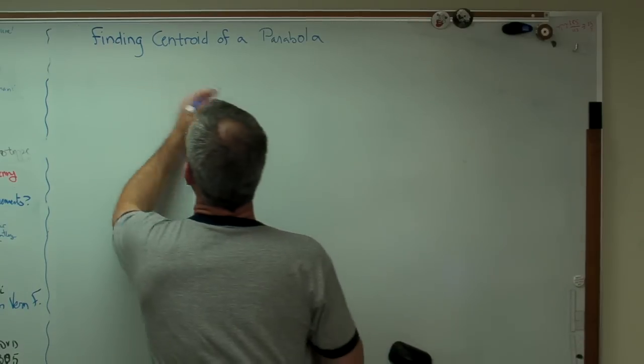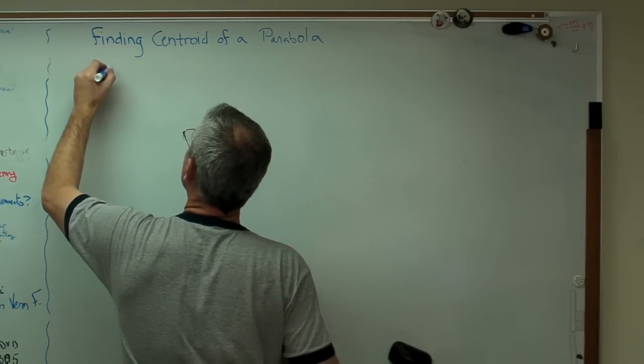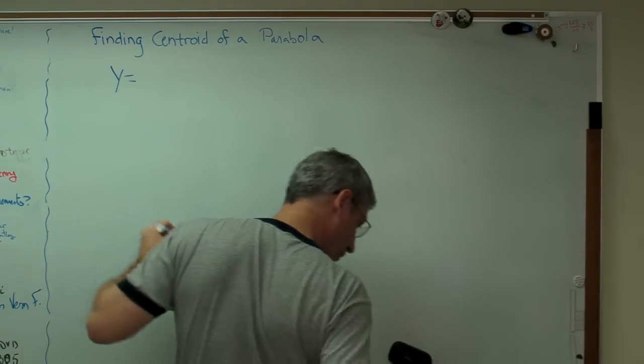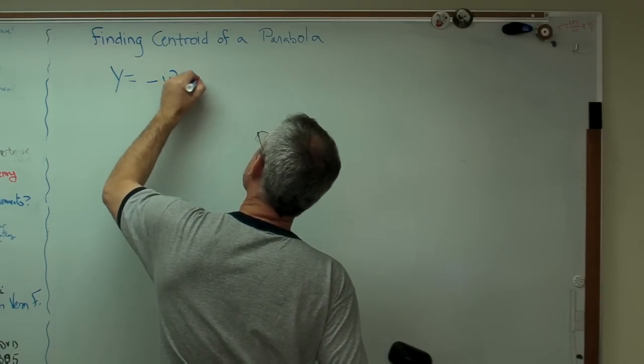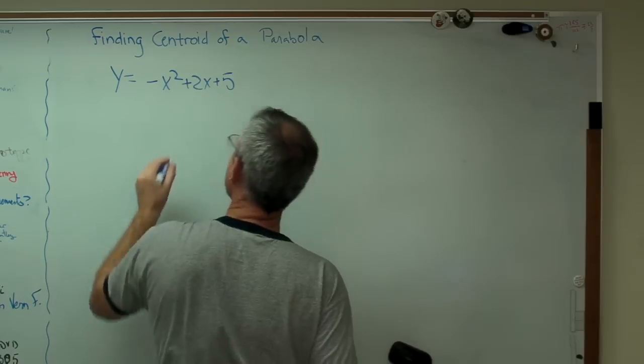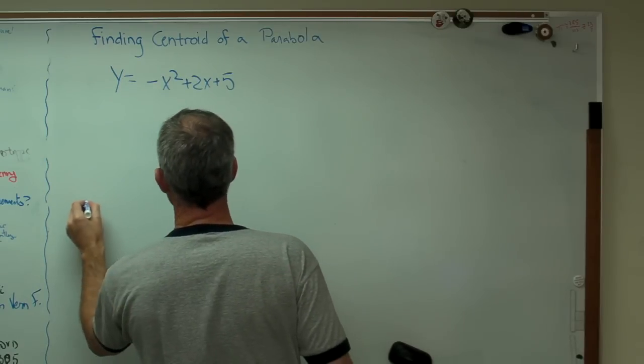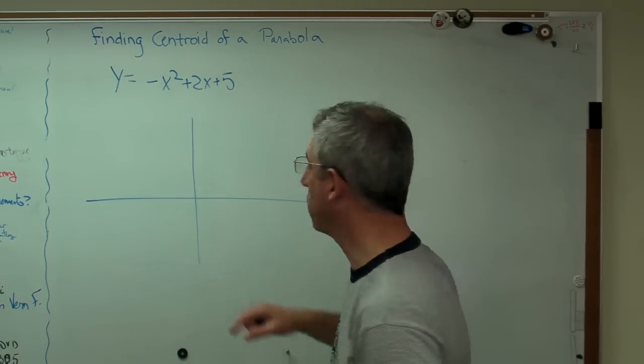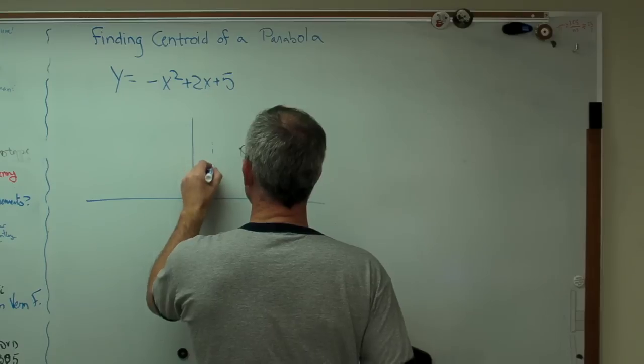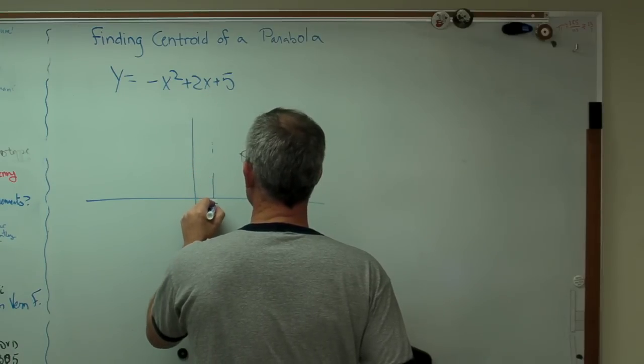So let's say that y equals minus x squared plus 2x plus 5. And if you draw this out, that's the y axis where x equals 0. The center point of this thing is at x equals 1.